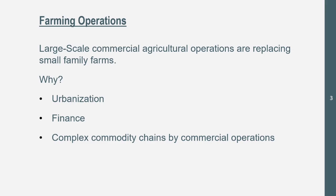Then we see complex commodity chains driven by commercial operations. Commercial operations are able to produce goods that go to the processors and then to the markets to make money. They can do double crops, hybrid cropping, GMOs, all of that stuff, and make a ton more money than those small family farms who don't have much access to processed foods, markets, and more profit.